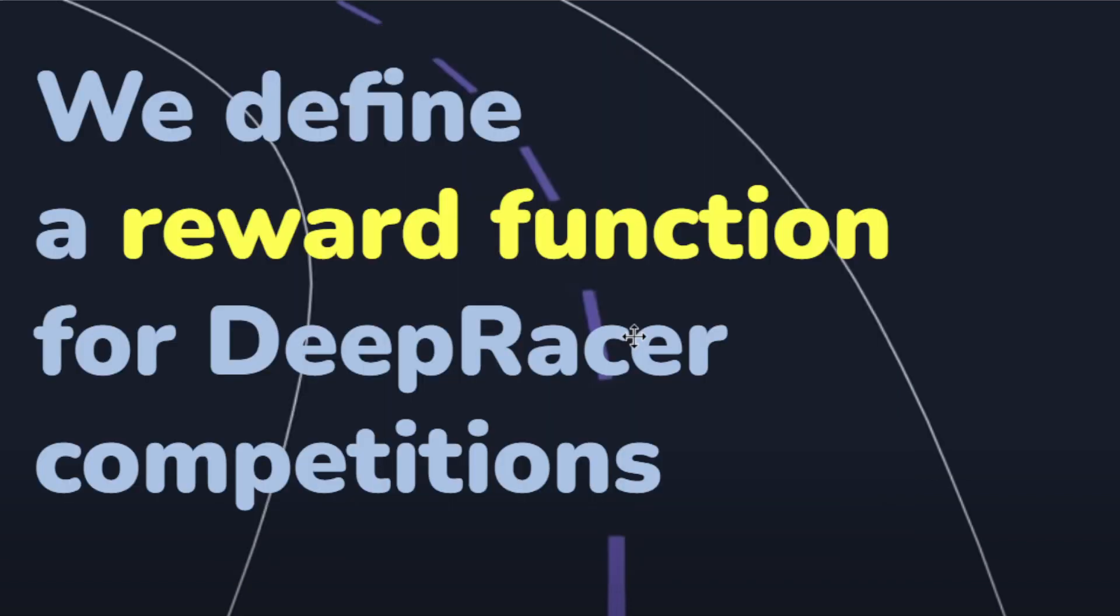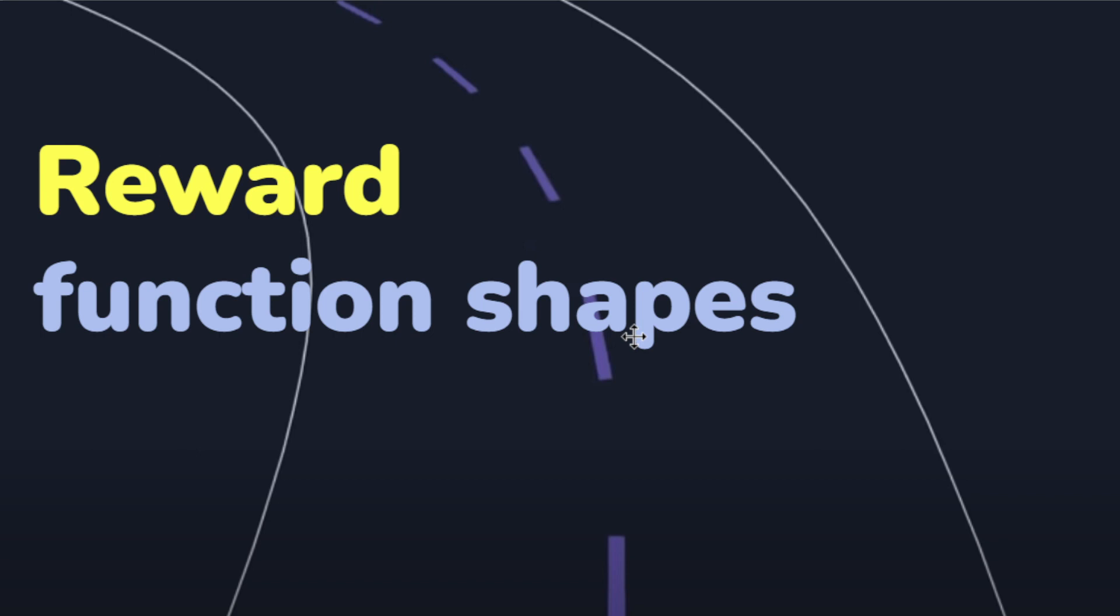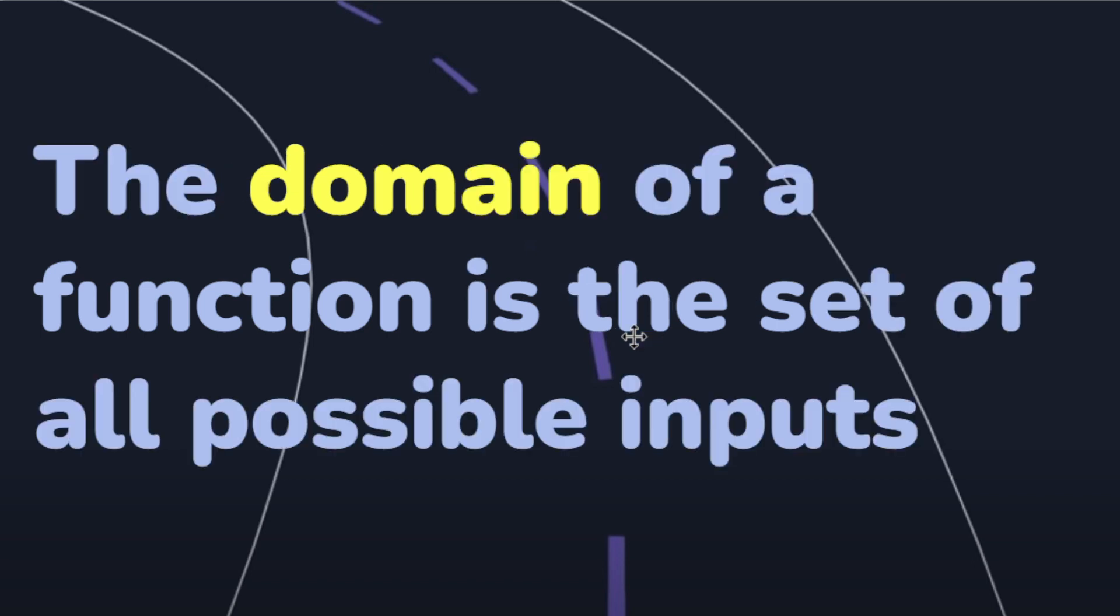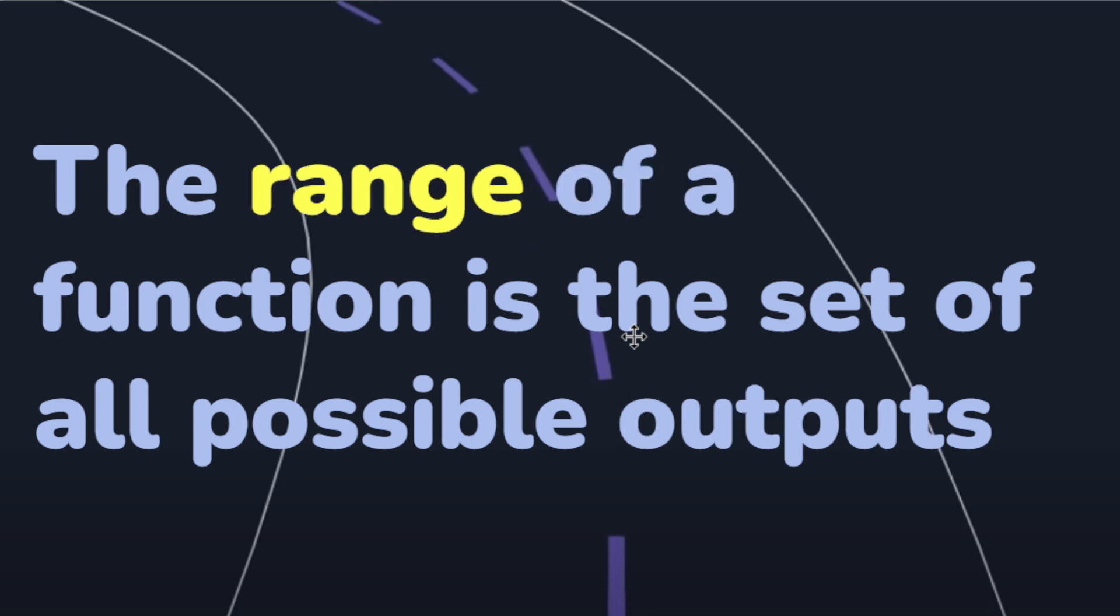So we need to define the reward function for DeepRacer. That's the whole point of the competition. That magical function that's going to teach the car how to drive. I want to talk about reward function shapes, and I have other videos about this, but again, I wanted to go back to basics and really cover some fundamental topics that sometimes I think I realized some people just don't get, and I want to make sure people understand. So let's go through some terminology. The domain of a function is a set of all possible inputs, right? That's the stuff that you're feeding into the function. And the range of a function is a set of all possible outputs.